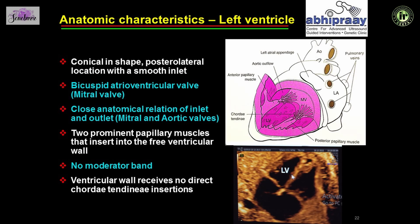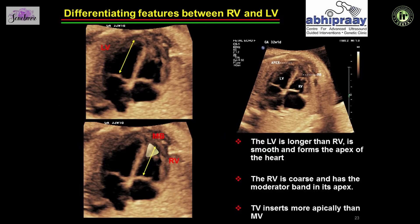The left ventricle appears apparently larger than the right because it does not contain a moderator band; however, it is actually of equal size to the right ventricle and is more conical due to the absence of the moderator band. The bicuspid (mitral) valve is inserted slightly higher on the septum than the tricuspid valve, and the chordae tendinae of the mitral valve insert onto the lateral aspect of the left ventricle. The tricuspid valve is more apically placed than the mitral valve.